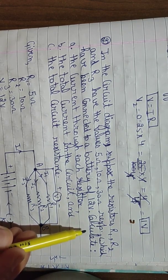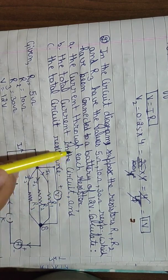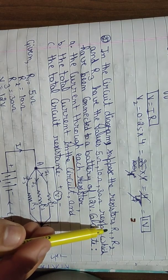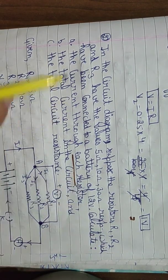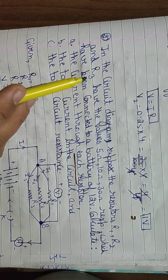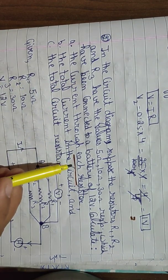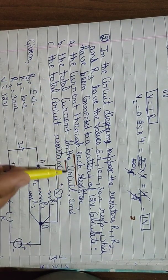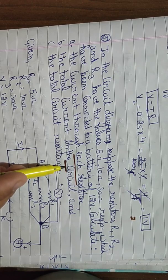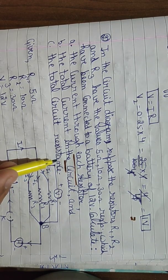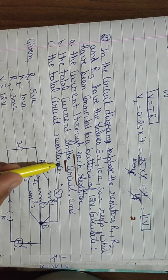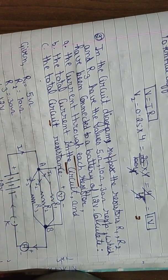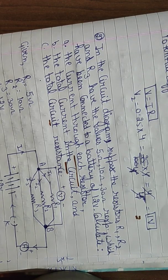Calculate: (a) the current through each resistor — meaning how much current flows through R1, R2, and R3 separately; (b) the total current in the circuit — keep this in mind, it is the total current of the whole circuit; and (c) the total circuit resistance — the resistance of the entire circuit.